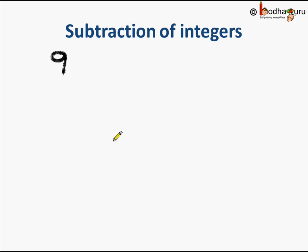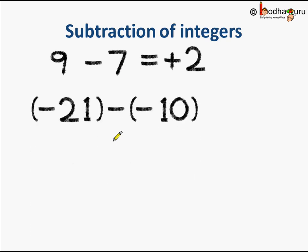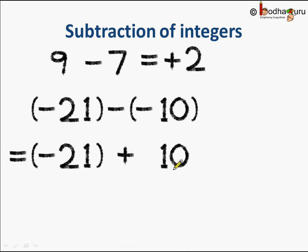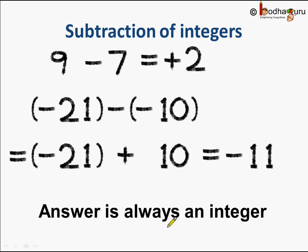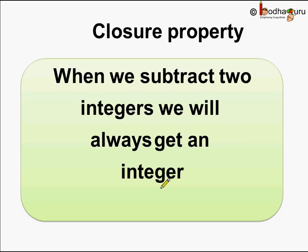Now let us see subtraction of integers. 9 minus 7 is equal to plus 2. Minus 21 minus minus 10 — here minus minus becomes plus, so we get minus 21 plus 10, and the answer becomes minus 11, since 21 minus 10 is 11 and we put the sign of the number with higher absolute value, which is 21, giving minus 11. The answer is always an integer, so integers are closed under subtraction.